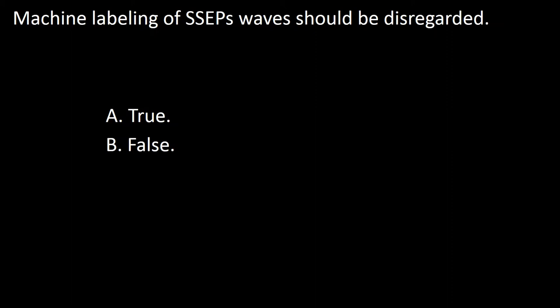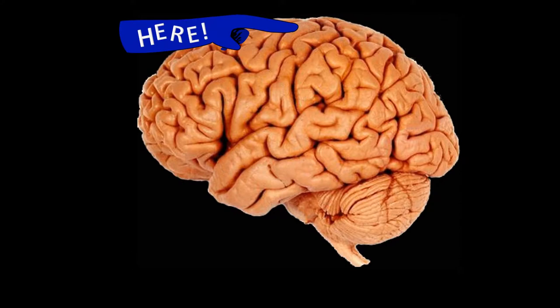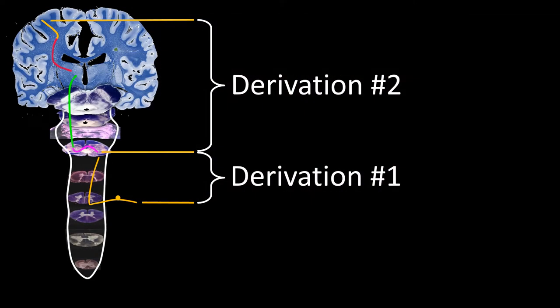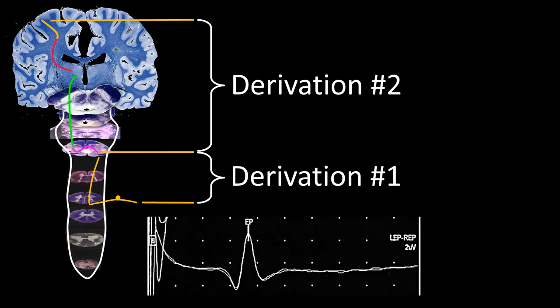The first question is: machine labeling of somatosensory evoked potentials waves should be disregarded. A true, B false. The purpose of somatosensory evoked potentials is to sample segments of the nervous system for neurological localization. The sampling is carried out using derivations that compare electrical activity from one site to another. The waves encountered in each derivation reflect the fields created by activated structures in the path of the signal towards the cerebral cortex. Hence, wave identification is paramount for somatosensory evoked potential interpretation and neurologic localization.